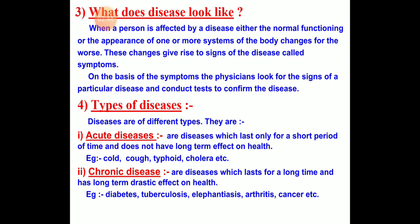There are two types of disease. If a disease lasts only for a short period and will not have a long-term effect on health, it is called an acute disease. It will not cause any major financial loss and will also not cause loss of weight. For example: cold, cough, typhoid, cholera.